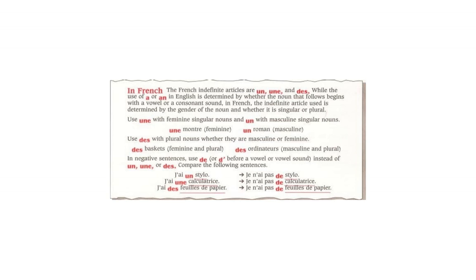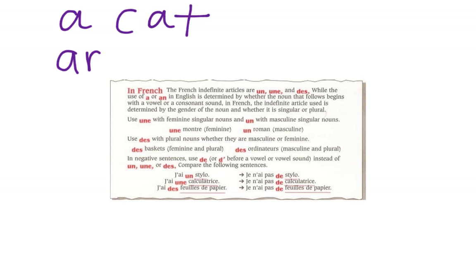For example, in English, we say 'a cat' but we say 'an apple.' We use 'an' because 'apple' starts with a vowel, and we don't want two vowels next to each other — it sounds better to say 'an apple' than 'a apple.' In French, they don't do that.